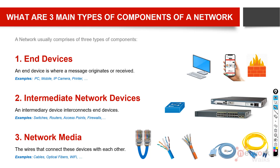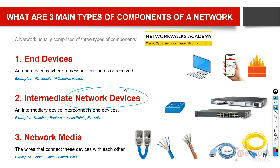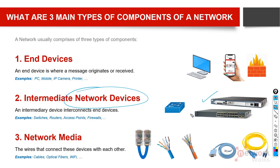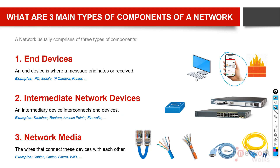The second type of devices are called intermediate network devices, or simply network devices in common language. These are our routers, our switches, our access points, our firewalls. These kinds of devices mainly interconnect the end devices together. For example, if you want to connect this mobile phone with this computer, we can take a cable or use a Wi-Fi device where this mobile phone will be connected. In this way they are connected together.